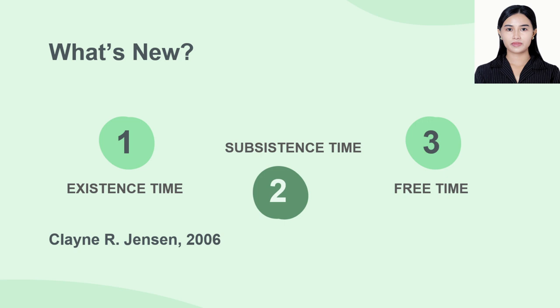A day can be divided into three parts, according to Klein R. Jensen, 2006. He specified: existence time, subsistence time, and free time. When we say existence time, it is the time spent for biological needs like having a meal, sleeping, and taking a bath. That is what we call existence time — when you spend yourself attending to your biological needs.